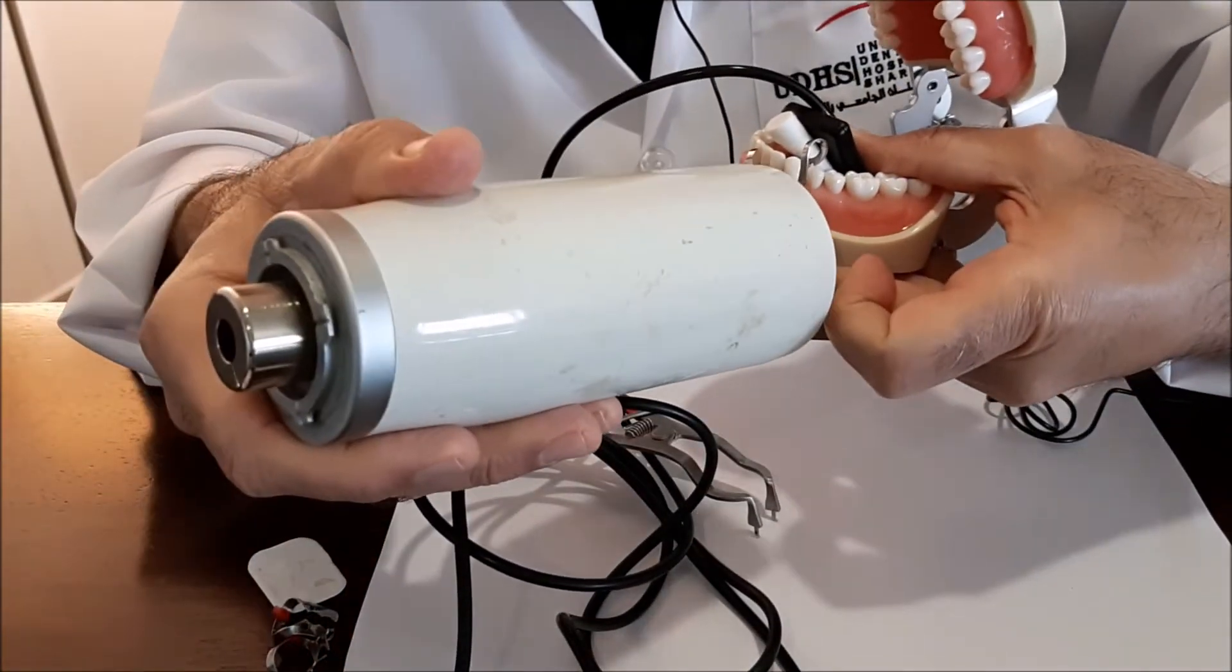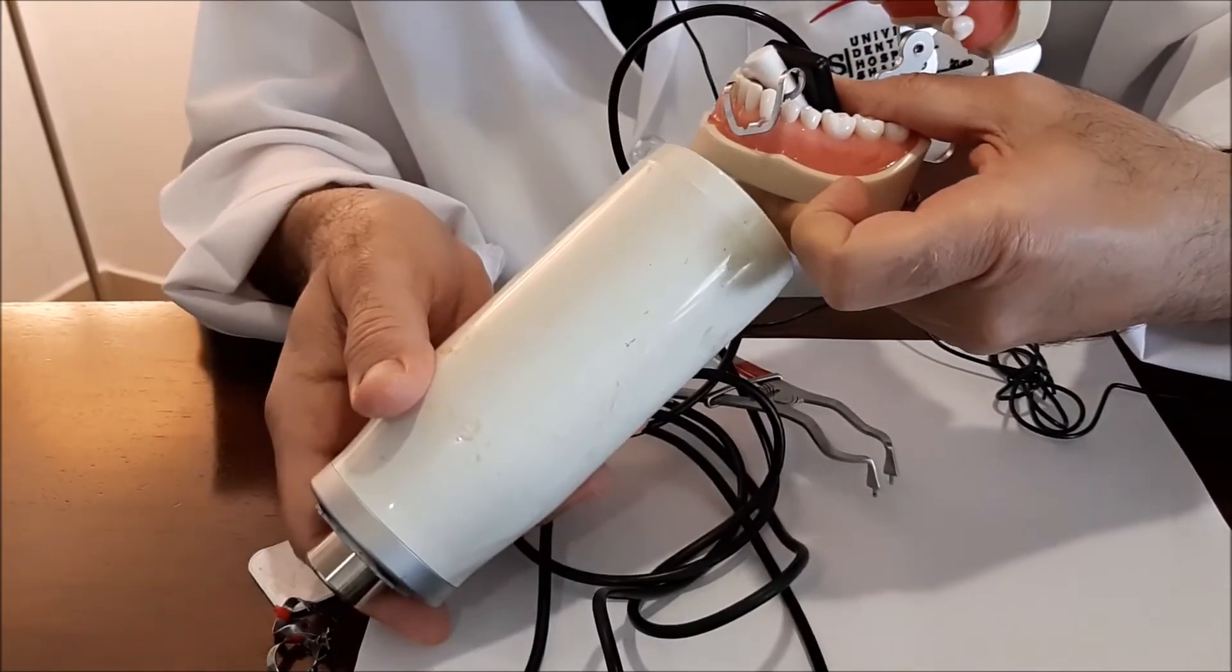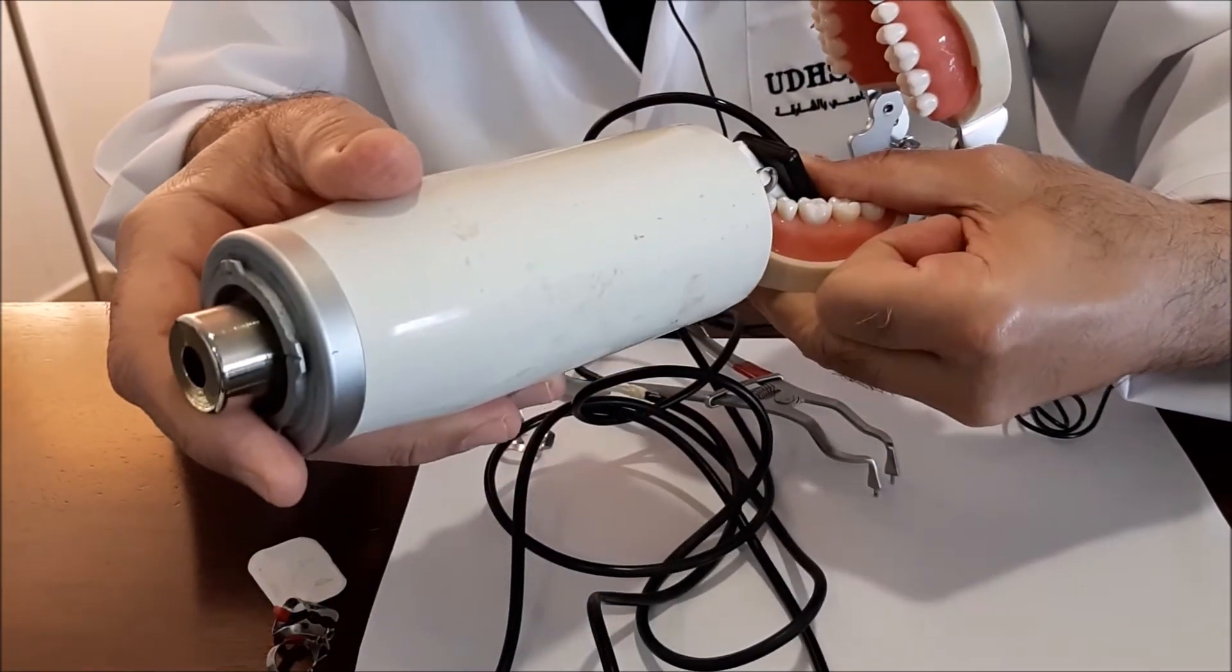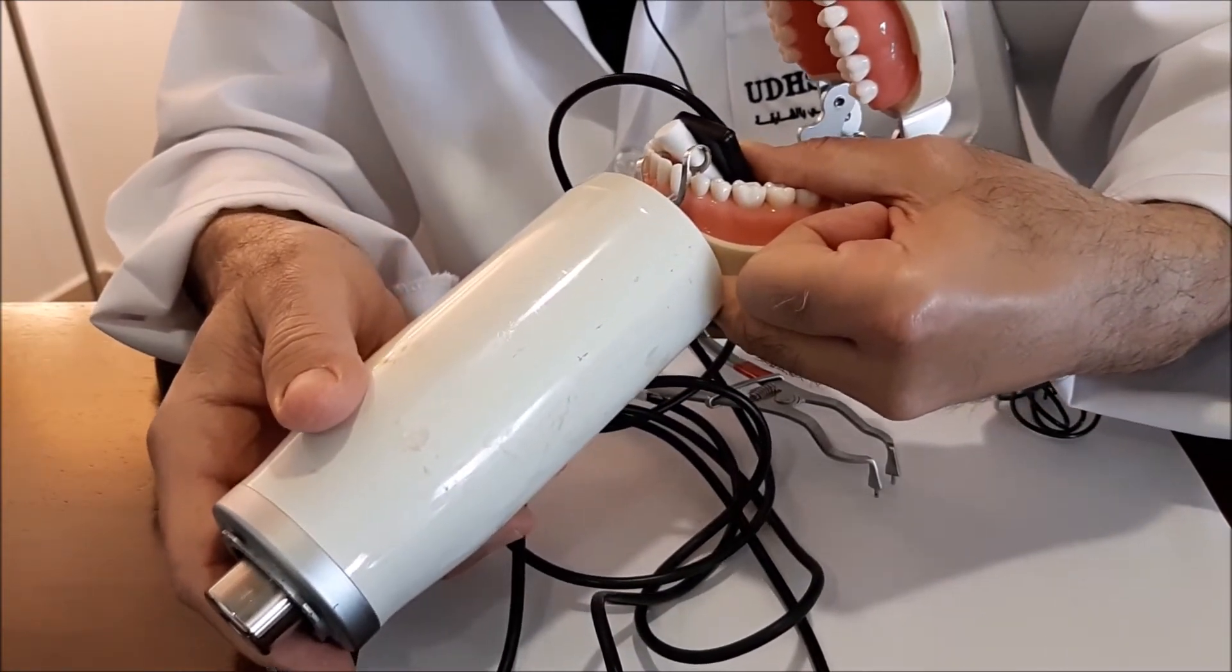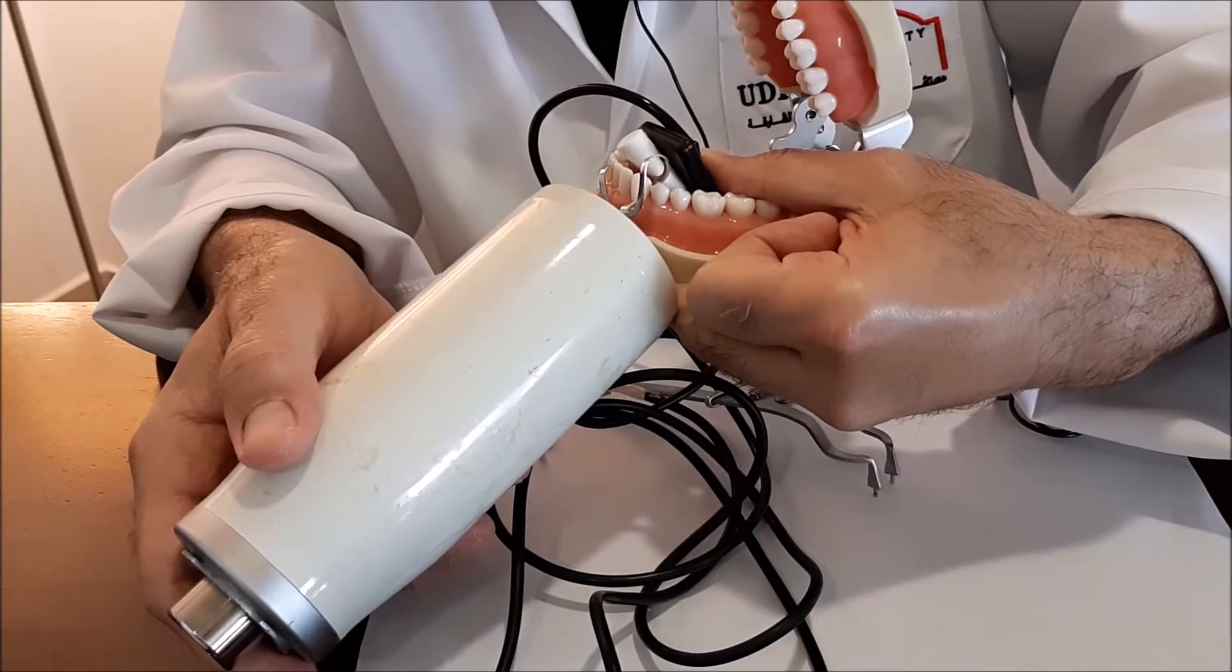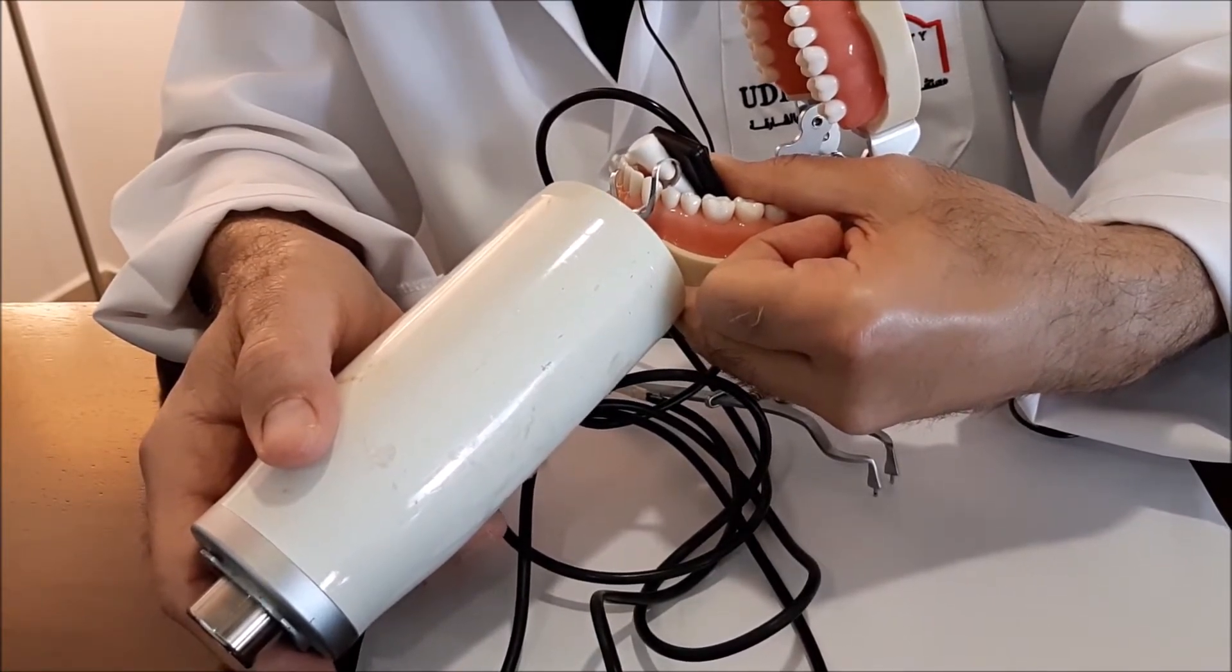So instead of giving a big extreme downwards like we did without the cotton roll, this is perpendicular on the tooth, perpendicular on the film, and a minus 15 will be quite enough to produce a good image. So the chances of distortion will be less.